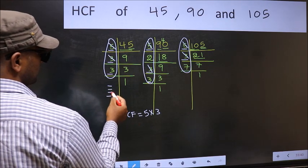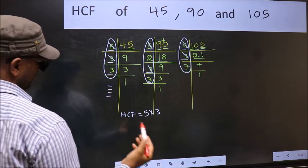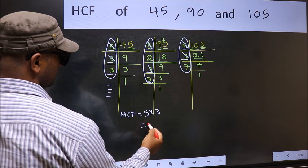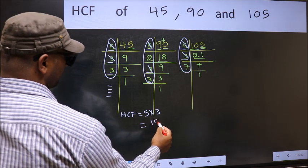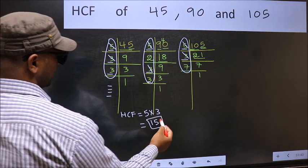No more numbers have been left out. So our HCF is 5 into 3. 15 is our HCF.